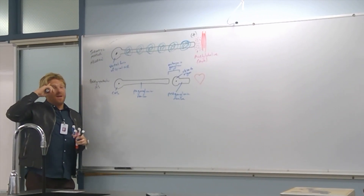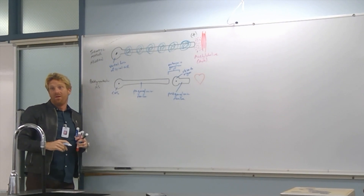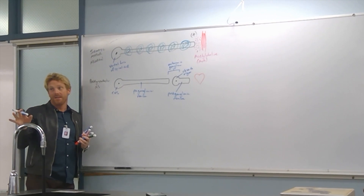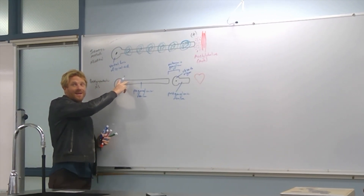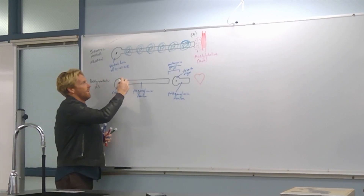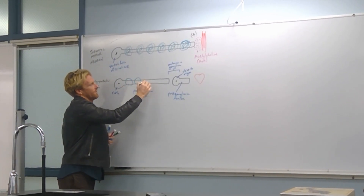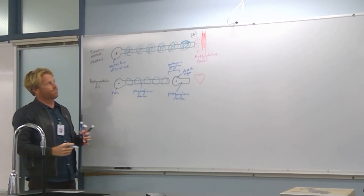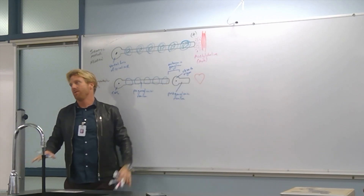Does this pathway need to be as fast as the somatic pathway? No — so the preganglionic neuron is only lightly myelinated, represented by open blue circles. The postganglionic neuron has no myelin — no Schwann cells whatsoever.